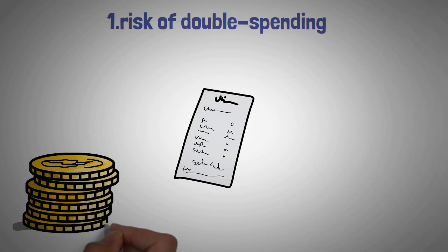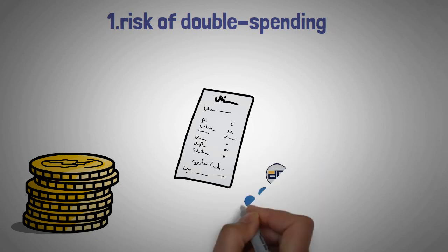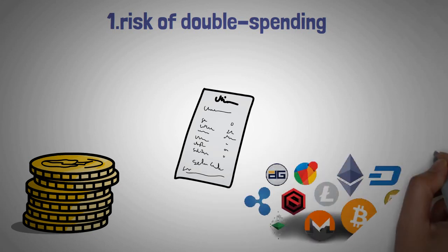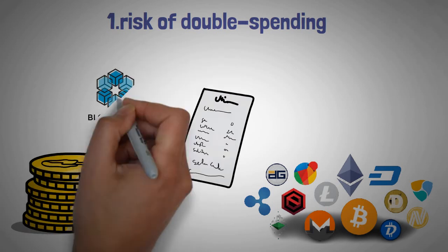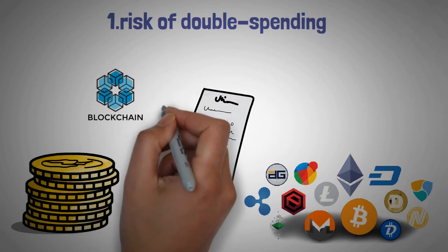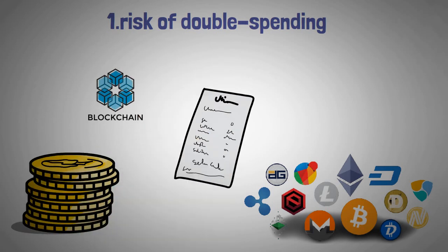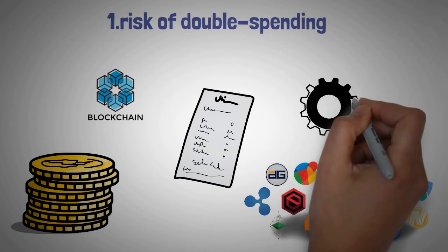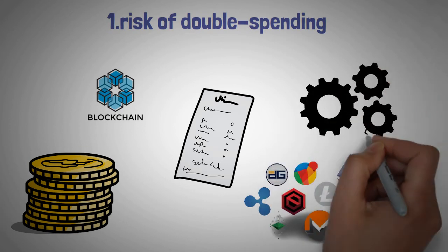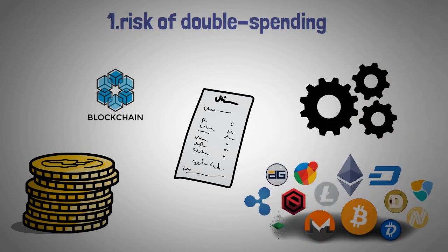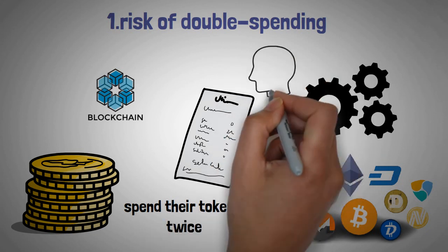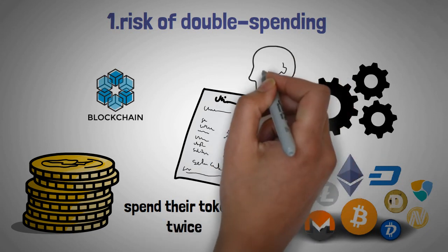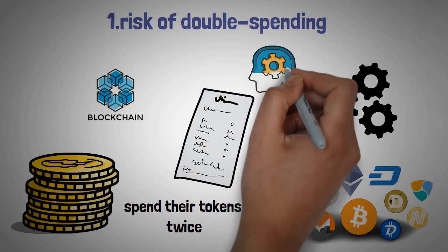Double spending is when someone tries to spend the same cryptocurrency twice. With Ethereum, this is not possible as all transactions are verified by miners before they are added to the blockchain. However, with PulseChain, because of its unique consensus mechanism, it will be possible for someone to try and spend their tokens twice. The team at PulseChain is aware of this risk and is working on ways to mitigate it, but it's something to keep in mind.